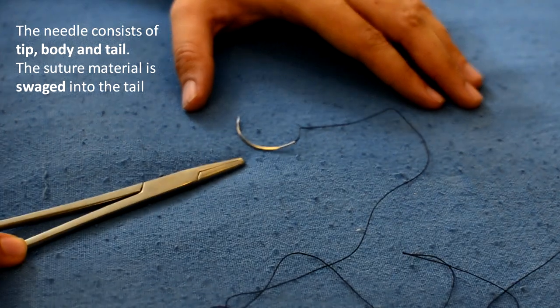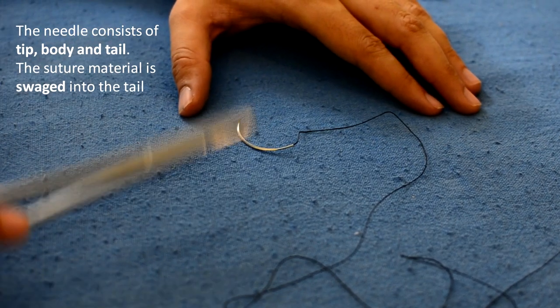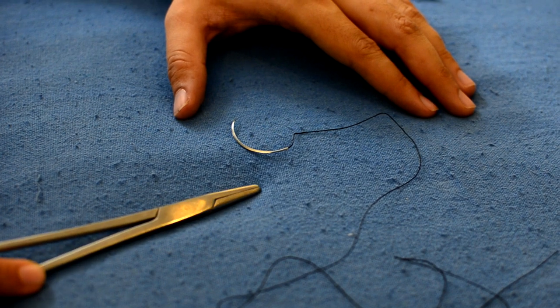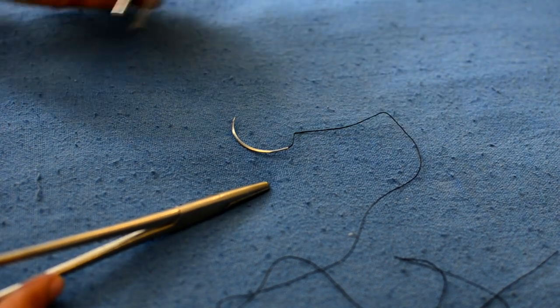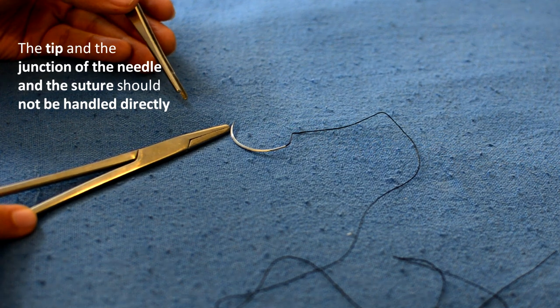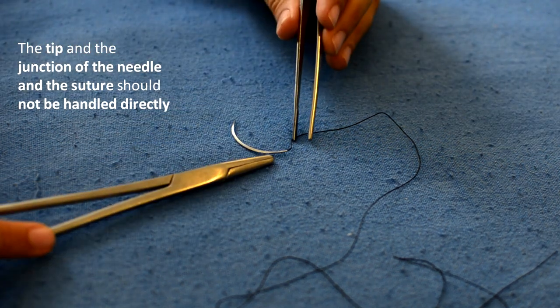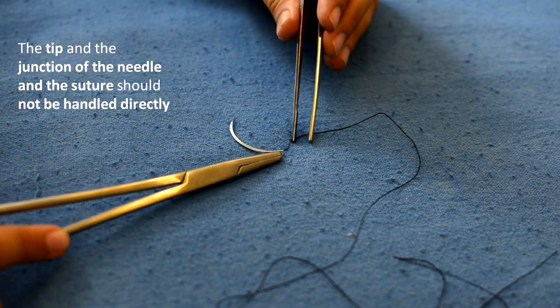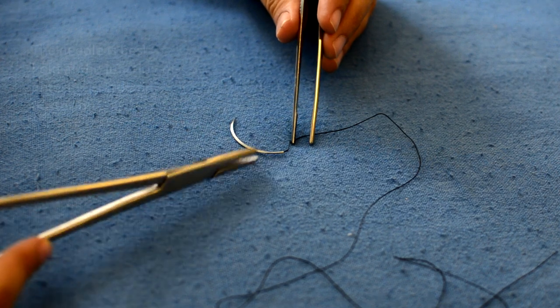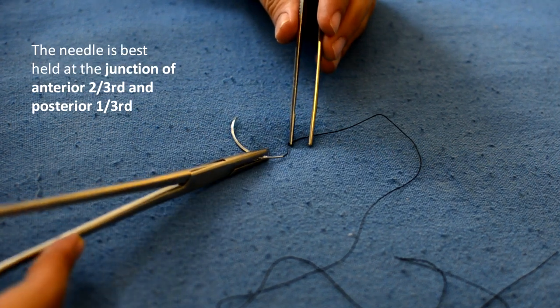Here we see the basic parts of the needle. There's the tip, the body and the tail. The thing that we have to remember is that the tip and the junction of the needle to the suture should not be handled directly. It's best to hold the needle at the junction of anterior 2-3rd and the posterior 1-3rd.